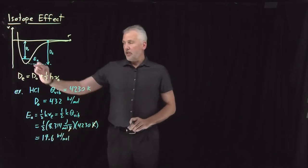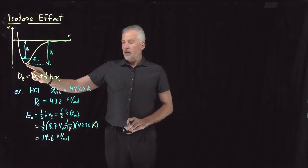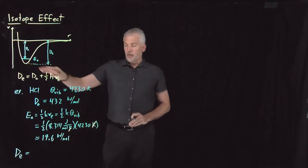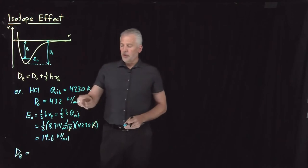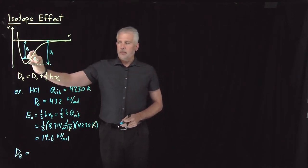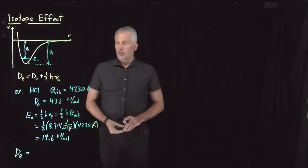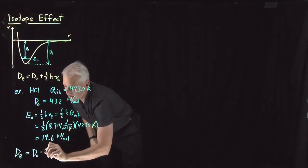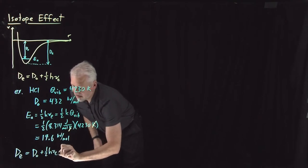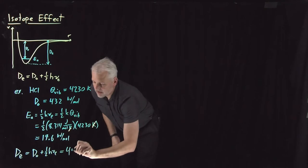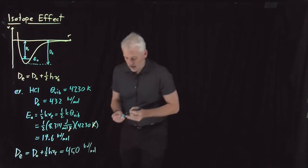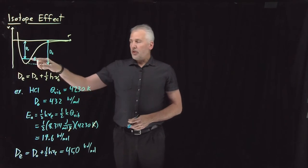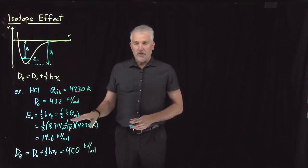So that's the zero point energy — that's the height of this ground state above the bottom of the well. If we want to know D sub e, the dissociation energy from the bottom of the well, that's the 432 kilojoules per mole from the ground state plus an additional roughly 18 kilojoules per mole that the ground state is above the bottom. So D naught plus the zero point energy: 432 plus 18 works out to 450 kilojoules per mole.